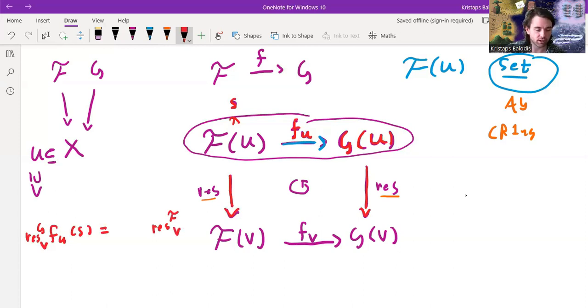Then that ought to be the same thing as first applying the restriction map coming from my sheaf, or pre-sheaf, I should say, F, and then of course applying the morphism I have over the open set V.